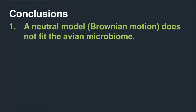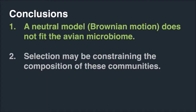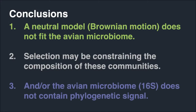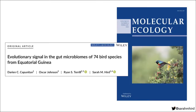The conclusions here are that a neutral model, Brownian motion, does not fit the avian microbiome — we saw no evidence for Brownian motion fitting these traits. Second, selection may be constraining the composition of these communities, or what I think is more likely, the avian microbiome as measured by 16S and relative abundance of bacterial phyla does not contain phylogenetic signal. This was published in 2020 in Molecular Ecology.